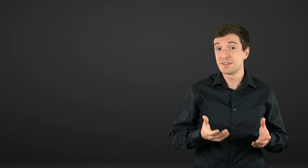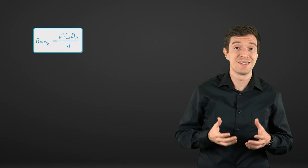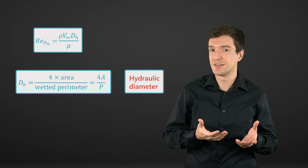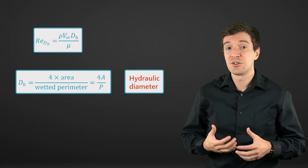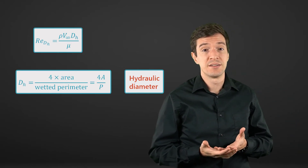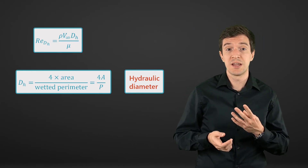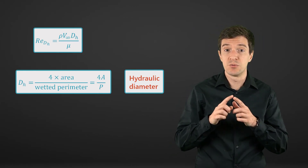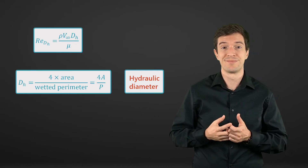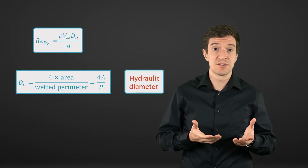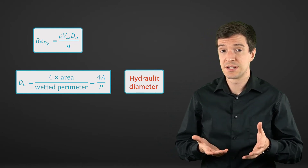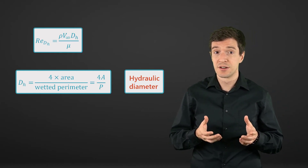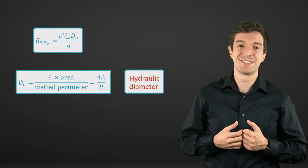For internal flows, the Reynolds number is normally based on the hydraulic diameter of the pipe or channel. The hydraulic diameter is defined as the ratio of 4 times the cross-sectional area divided by the wetted perimeter. In the next lesson, when we refer to the Reynolds number, it will be based on the hydraulic diameter as the characteristic length.